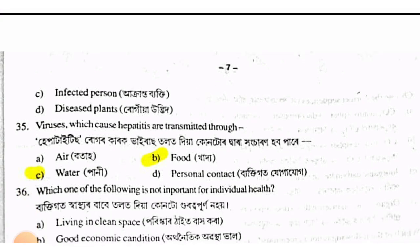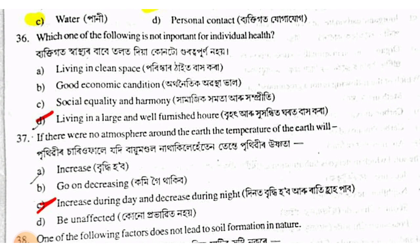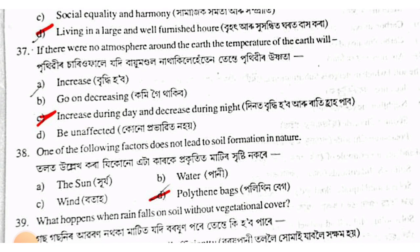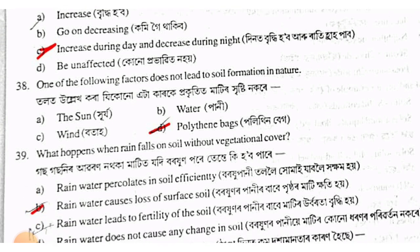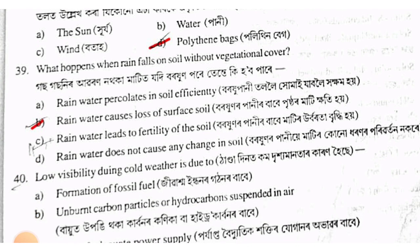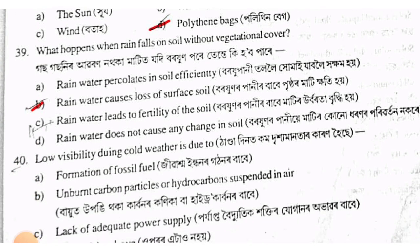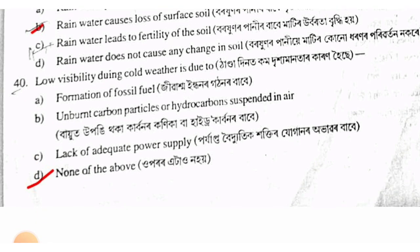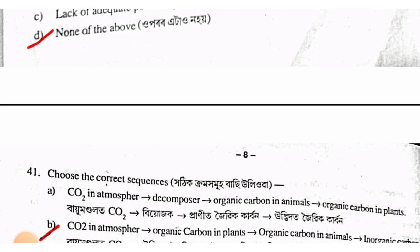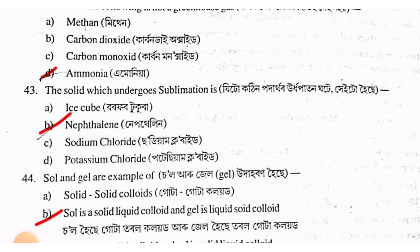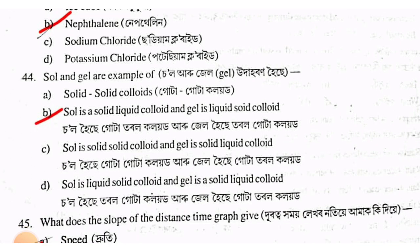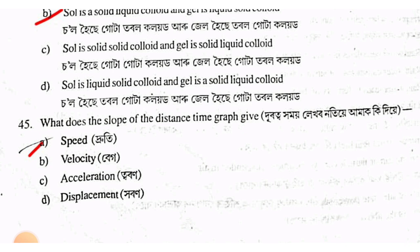Question about immune system — the answer decreases during night. Option D — polythene. Ammonia: option D. The answer for the chromatin question is option B — 40. Naphthalene — option B. The fabric option B.